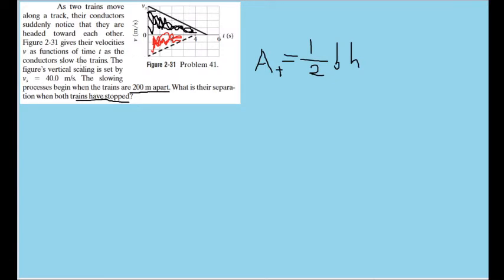First of all, let's make sure we understand the graph. The problem tells us that the scaling of the vertical axis is set by V sub S equals 40 meters per second. So V sub S, which is the top of the axis, is 40 meters per second. That means that each vertical notch here is equal to 10 meters per second individually.